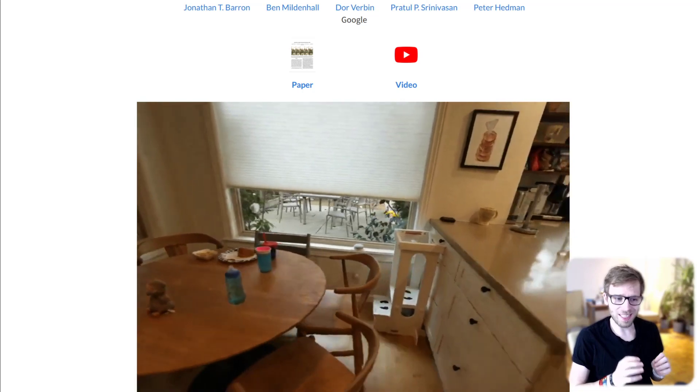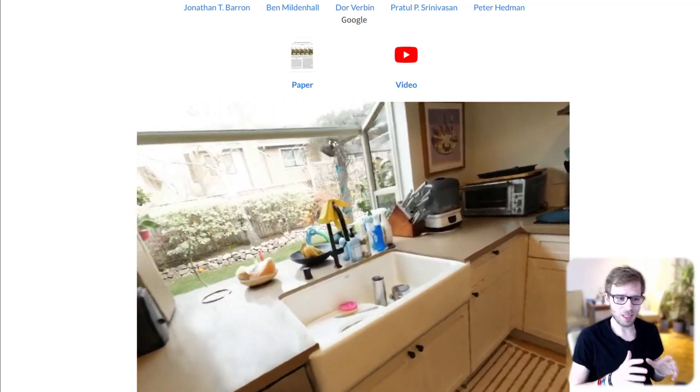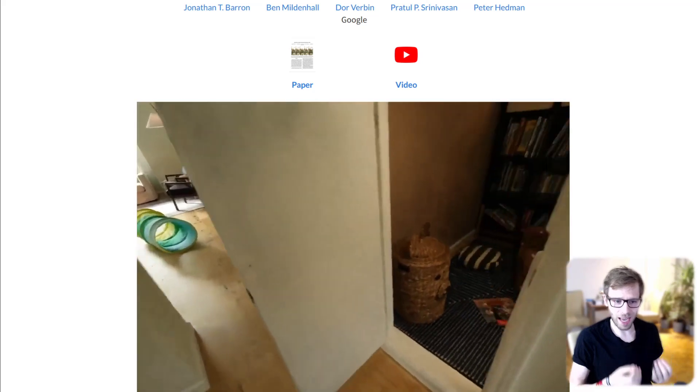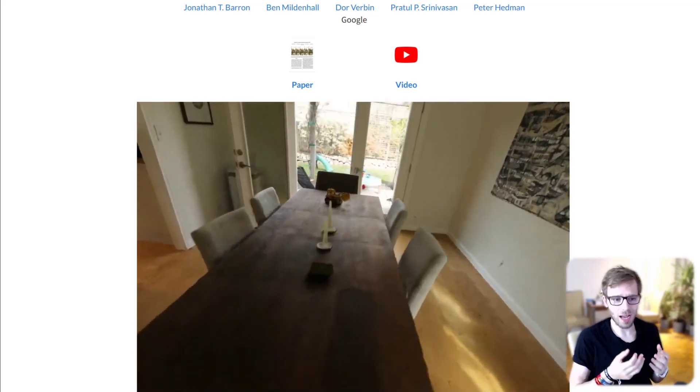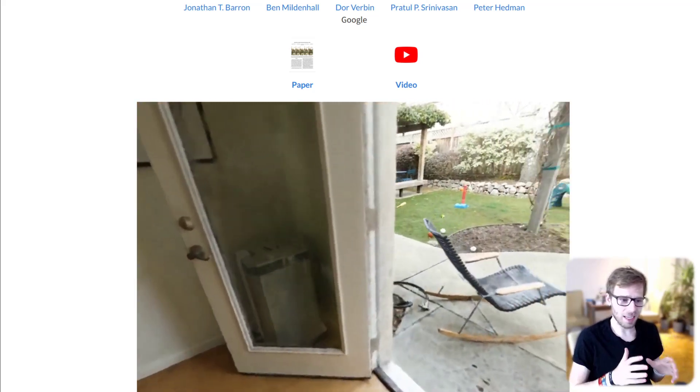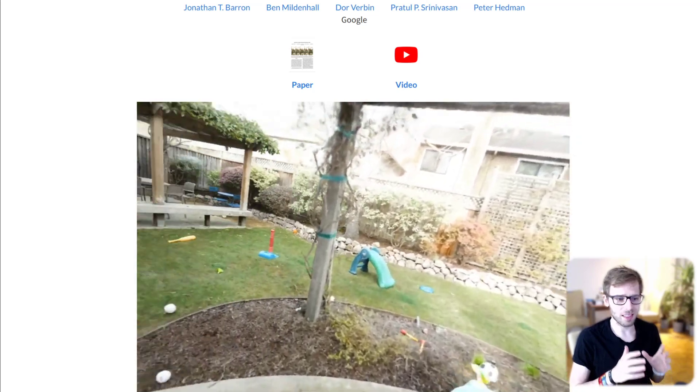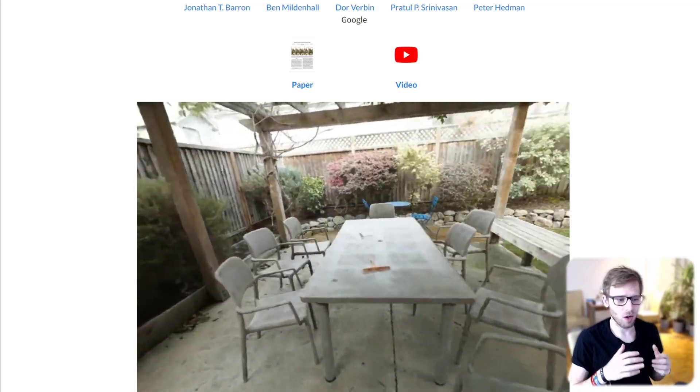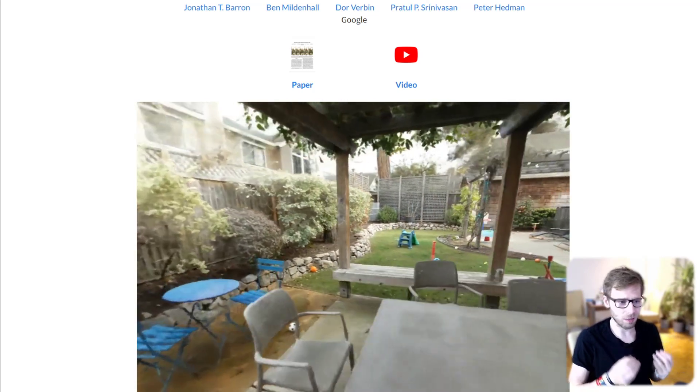But there is a catch. These grid-based approaches lack an explicit understanding of scale, which often introduces aliasing. This aliasing usually manifests as jagging or missing scene content, which can degrade the quality of the final rendered image.